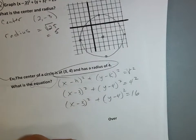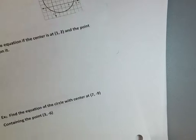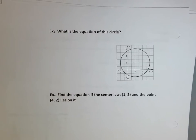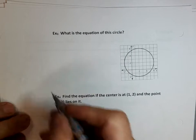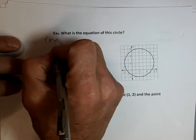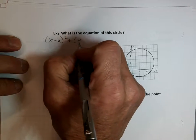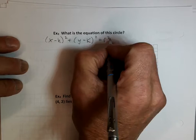Turn the page whenever you're ready. That's pretty easy, isn't it? Now, example three — what's the equation of this circle? Let's see if we can find the center. I know my equation is x minus h squared plus y minus k squared equals r squared.